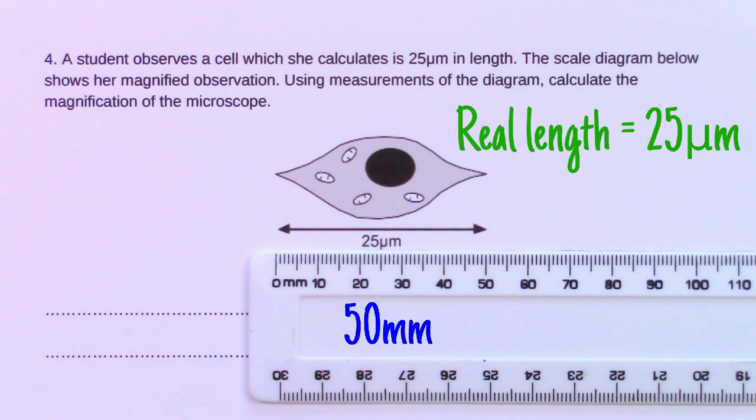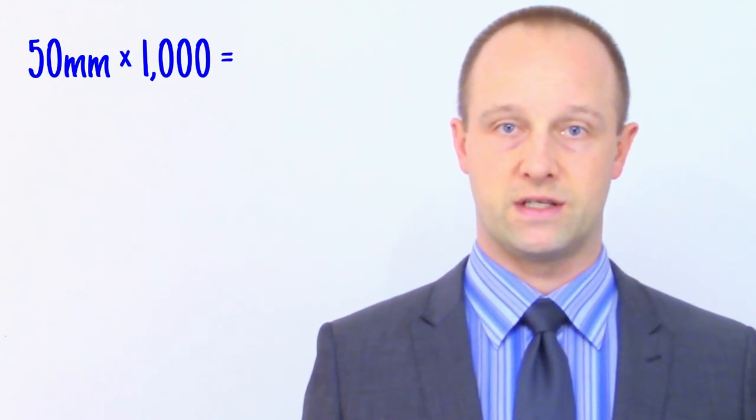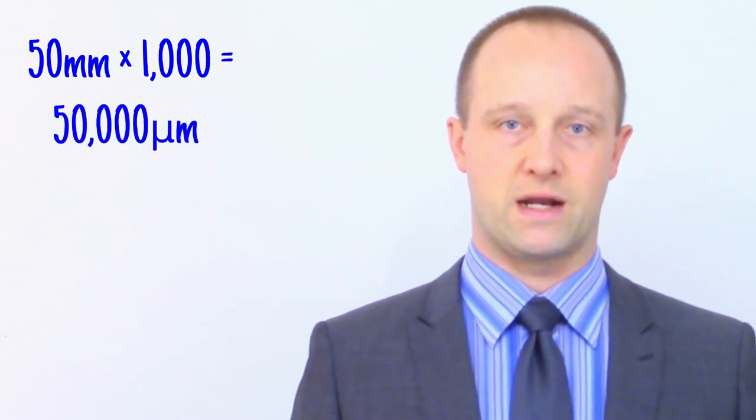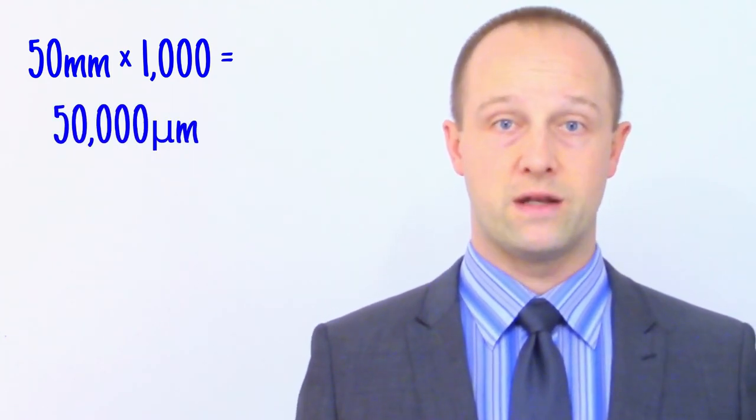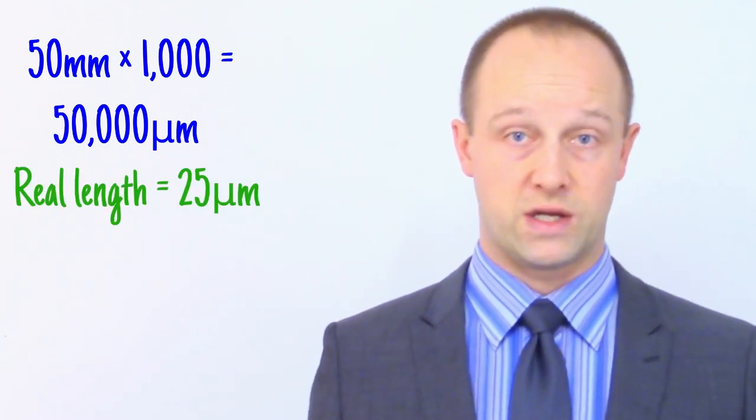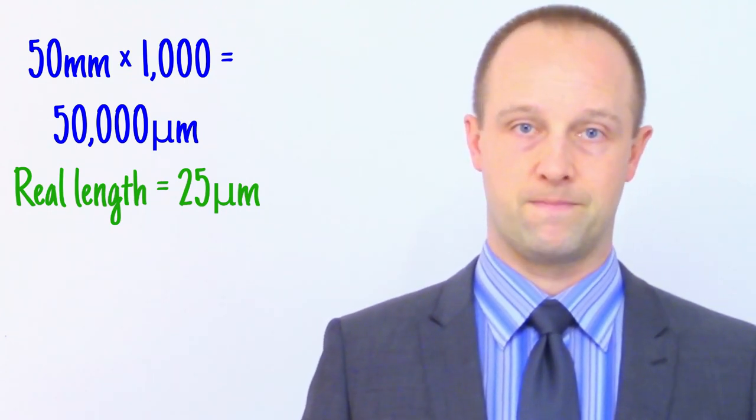Converting 50 millimetres to micrometres is just like converting 50 metres to millimetres. We should get a bigger number. And we increase or decrease by orders of a thousand, so we're going to multiply our 50 millimetres by a thousand to convert it. 50 millimetres multiplied by a thousand equals 50,000 micrometres. So now we know our original cell is 25 micrometres long, as the question tells us, but it's been drawn 50,000 micrometres long.